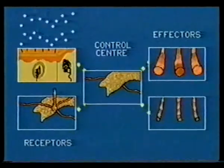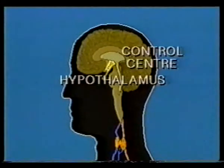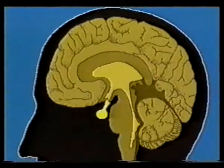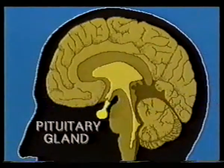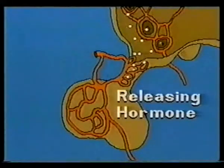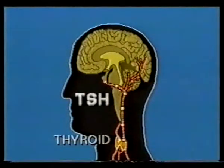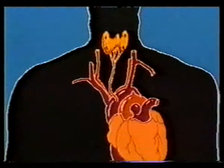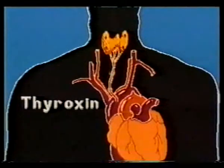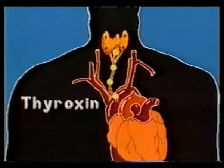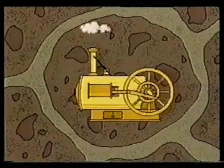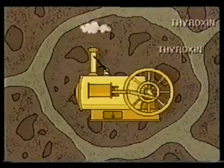Another response by the hypothalamus control center demonstrates an even more complex cycle. Near the hypothalamus is the pituitary gland. The hypothalamus may send a releasing hormone messenger to the pituitary. In turn, the pituitary releases a hormone known as thyroid stimulating hormone, or TSH, into the bloodstream. When the thyroid gland in the neck receives TSH, it releases another hormone, thyroxin, which is eventually pumped to every cell throughout the body. In response, each cell increases its metabolism and our internal furnaces release more heat.